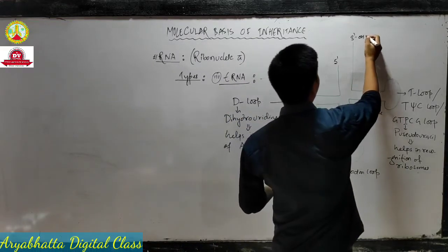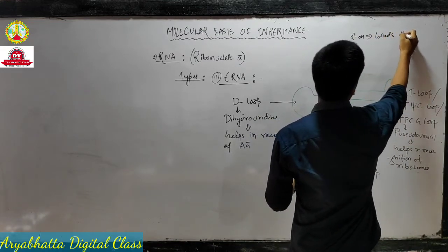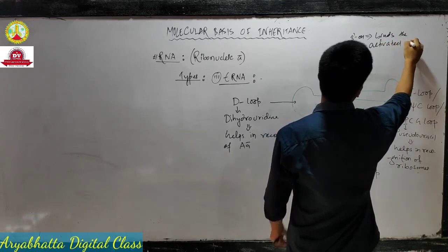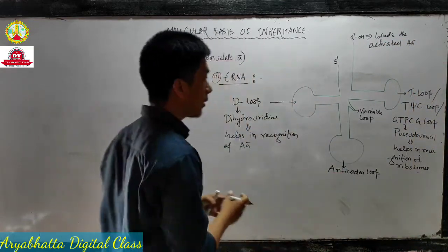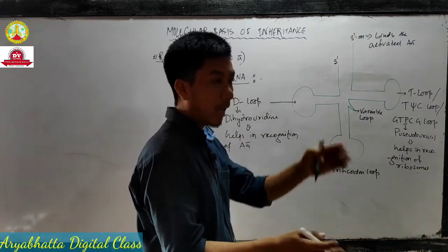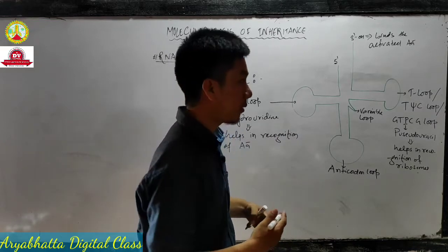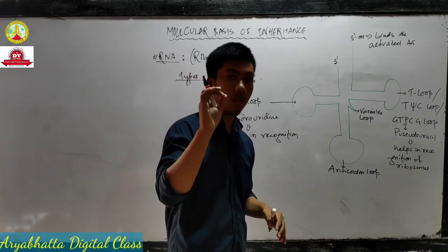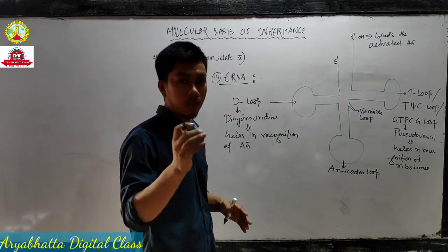The 3' OH group binds the activated amino acid, so tRNA is going to carry all the activated amino acids into the ribosome. Then the process for the formation of protein takes place, because for the formation of protein, activated amino acids are required.